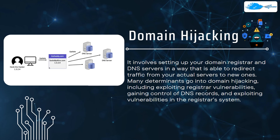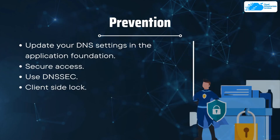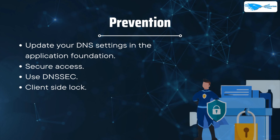Number nine is domain hijacking. Domain hijacking involves setting up your domain registrar and DNS server in a way that redirects traffic from your actual servers to new ones. To prevent it, update your DNS settings in the application foundation, ensure secure access, use DNSSEC, and apply a client-side lock.